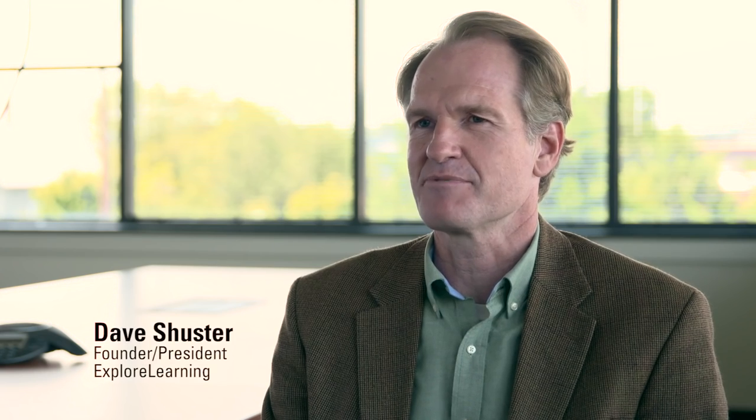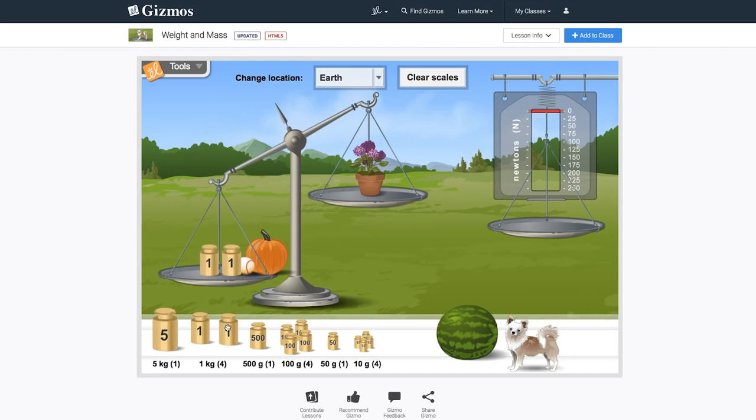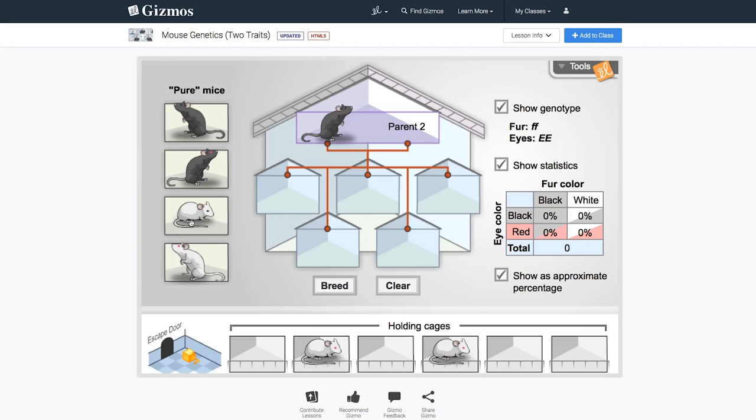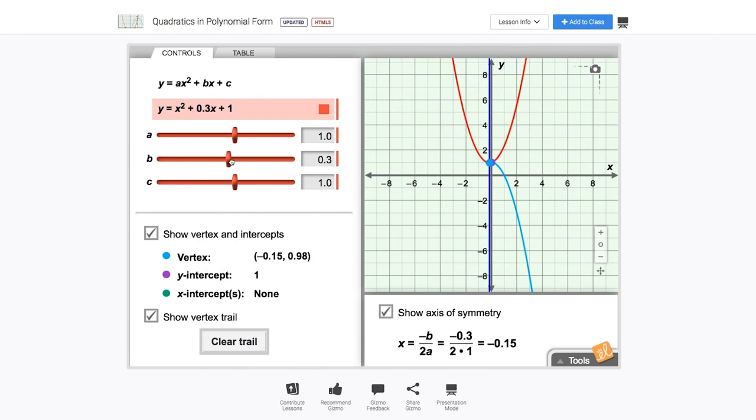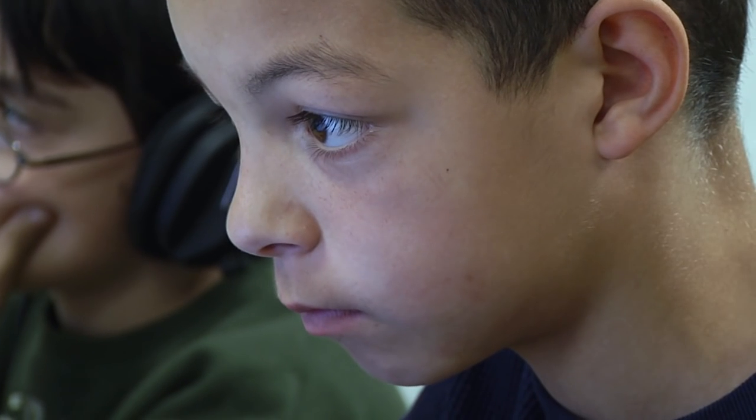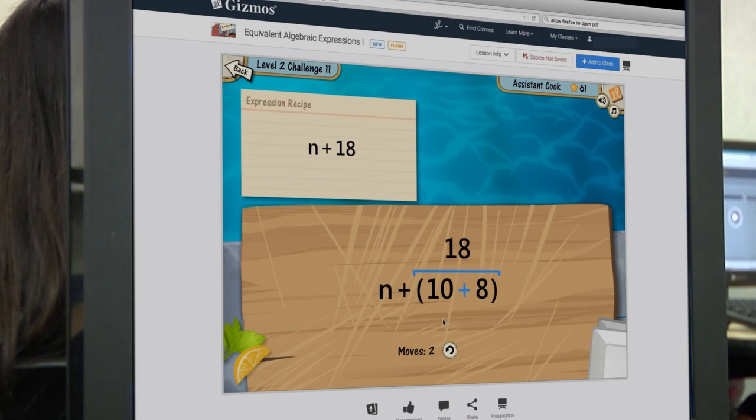Gizmos are online simulations that really help students make sense of challenging math and science concepts through inquiry and exploration. They can manipulate variables, they can do what-if investigations. That's a whole new dimension to what you can do in the classroom compared to reading a textbook or watching a video for example.